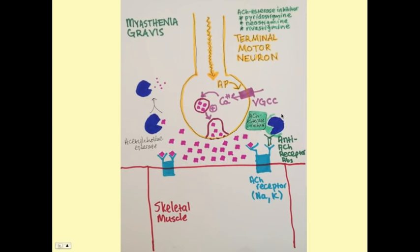Acetylcholinesterase inhibitors work by blocking AChE, resulting in more acetylcholine in the neuromuscular junction — the same amount released but less broken down. The increased acetylcholine can outcompete the anti-AChR antibodies, since they are competitive inhibitors of one another, restoring muscle contraction. This is the mechanism by which AChE inhibitors treat myasthenia gravis.